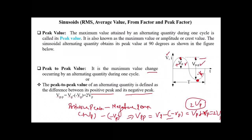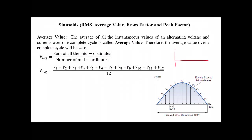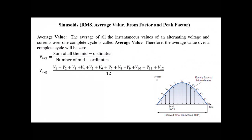The average value of all the instantaneous values of an alternating quantity — voltage or current — over one complete cycle is called the average value. The average value over a complete cycle will be zero. For example, the average value of a sine wave will be zero.